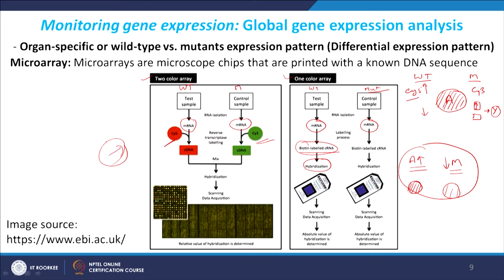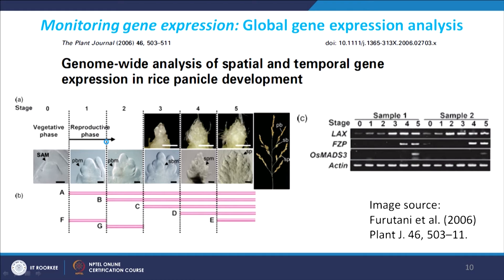These techniques can also be used for different developmental stages, not only wild type and mutant. For example, in this study people have examined genes differentially expressed at different developmental stages of rice panicle or flower development. Stage 0 is the vegetative phase with the shoot apical meristem. RNA is extracted from the vegetative phase, then after transition to reproductive phase, the inflorescence undergoes different stages — primary branch meristem, secondary branch meristem, secondary spikelet meristem — and RNA from all these stages was used for microarray analysis.